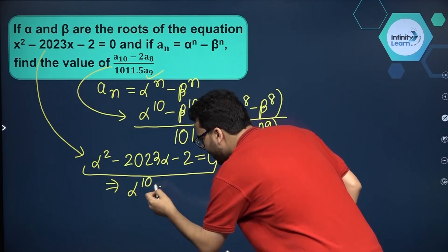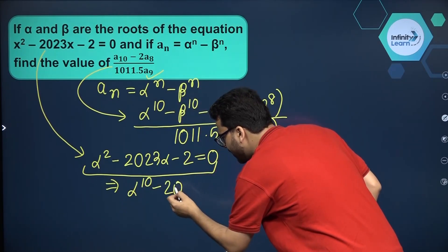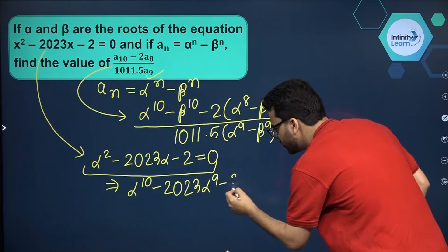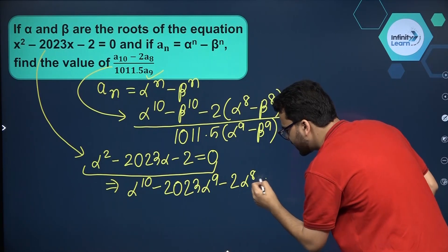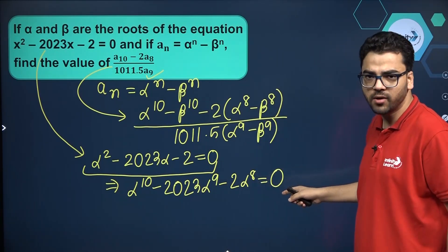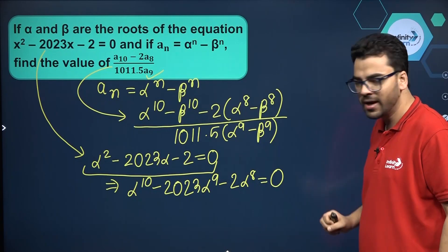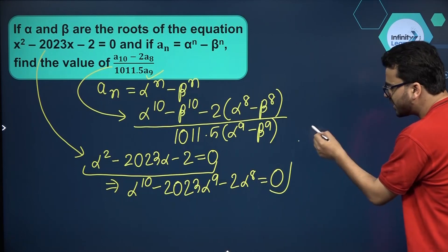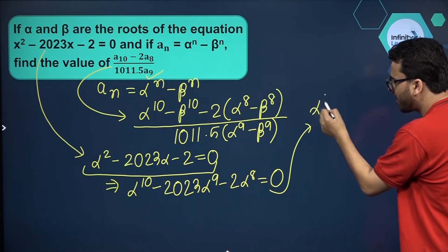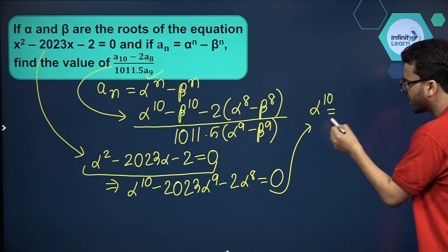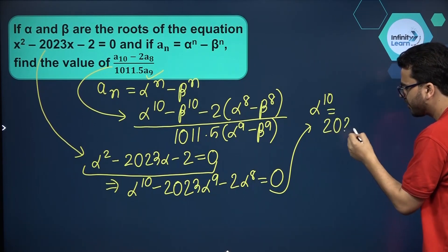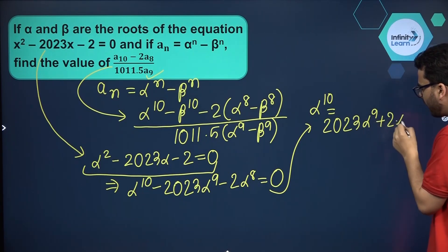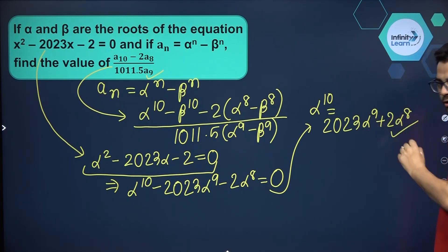Multiplying both sides by alpha to the power 8, we get: alpha raised to the power 10 minus 2023 alpha raised to the power 9 minus 2 alpha raised to the power 8 equals 0, since the right side is 0 times alpha to the power 8, which is still 0. Therefore, alpha raised to the power 10 equals 2023 alpha raised to the power 9 plus 2 alpha raised to the power 8.